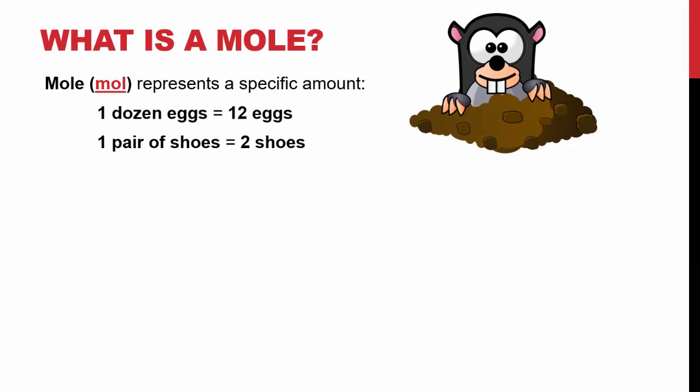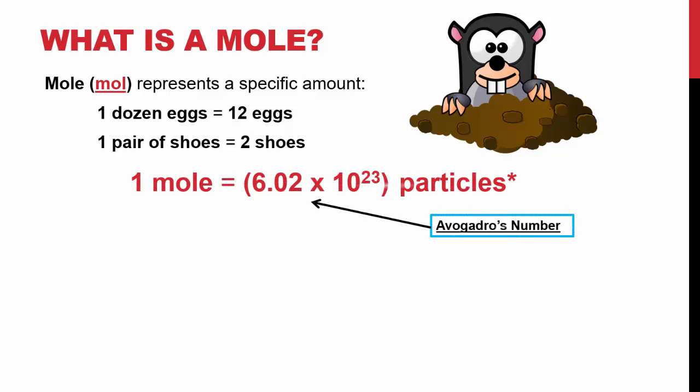To start off, a mole, represented by mol, represents a very specific amount in chemistry. If you think that a dozen eggs specifically is twelve, or a pair of shoes is going to be two shoes, a mole in chemistry represents 6.02 times 10 to the 23rd particles. We call this Avogadro's number, and we'll be getting into this number later on in the unit.